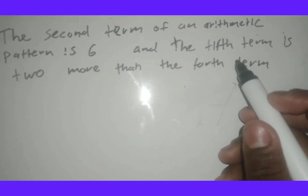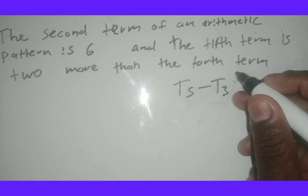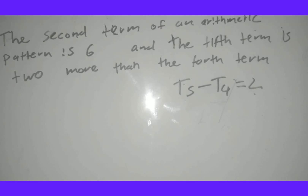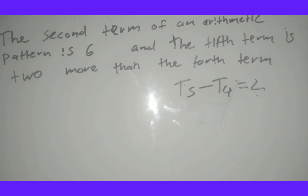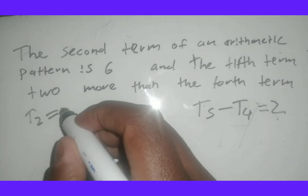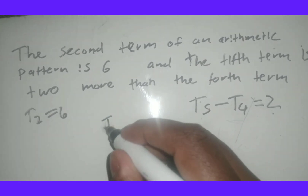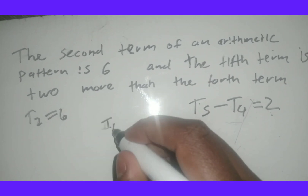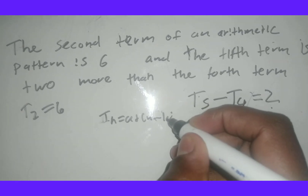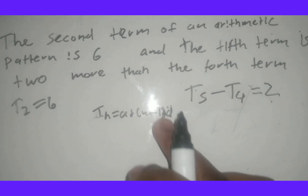So the fifth term is 2 more than the fourth term means t5 minus t4 equals 2. The second term equals 6 means t2 equals 6. We'll substitute both into the general formula tn equals a plus n minus 1 times d.